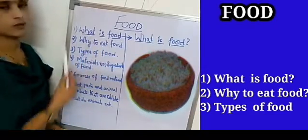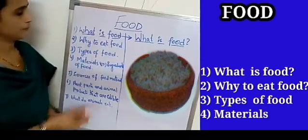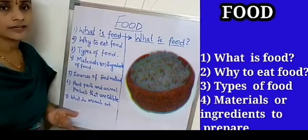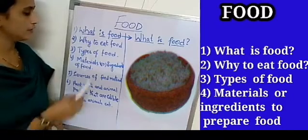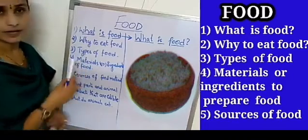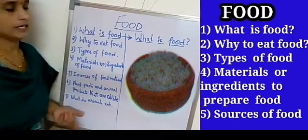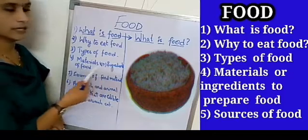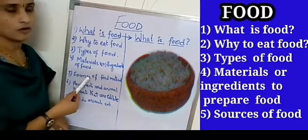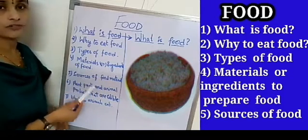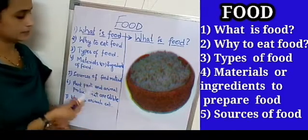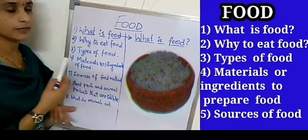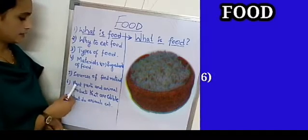The first point is: what is food? Next, why do we need to eat food? Types of food we eat, materials or the ingredients of food, sources of food materials — that is, from where do we get these food materials?